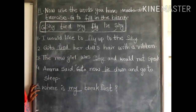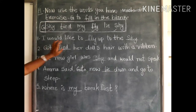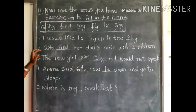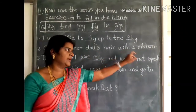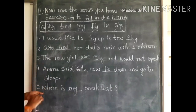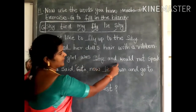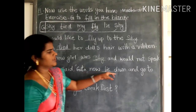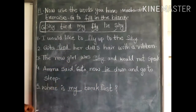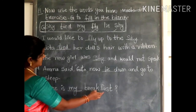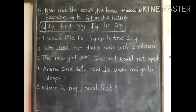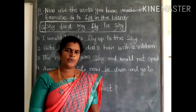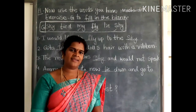Did you understand? Once again: I would like to fly up to the sky. Geetha tied her doll's hair with a ribbon. The new girl was shy and would not speak. Amma said, 'Geetha, now lie down and go to sleep.' Where is my breakfast? Do you understand today's class, children? I hope you understood today's class. Thank you, children.